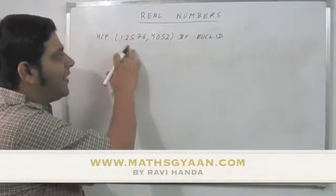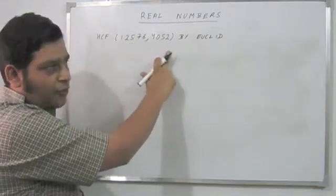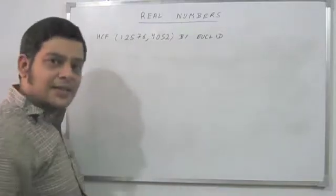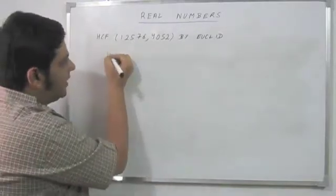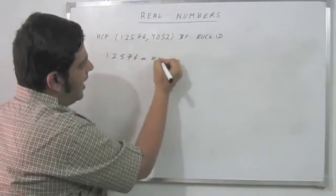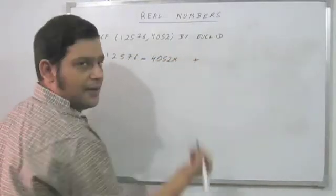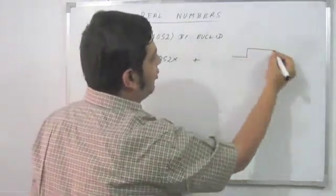Hello, we will try and find out the HCF of 12576 and 4052 by Euclid's algorithm. For this, I will need to express 12576 as 4052 into a particular number plus a remainder. Let us divide and see what comes out.